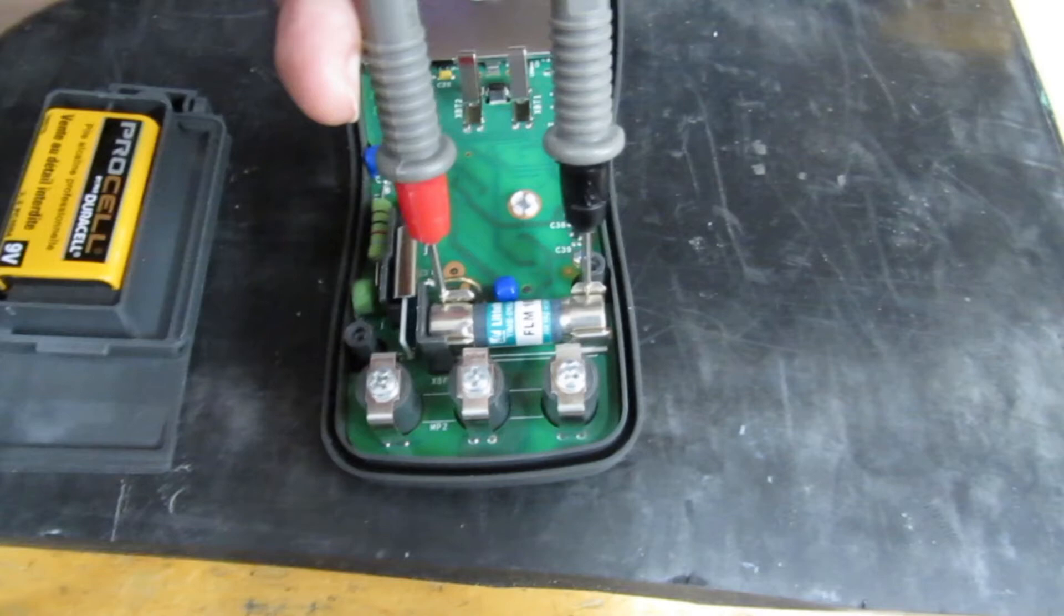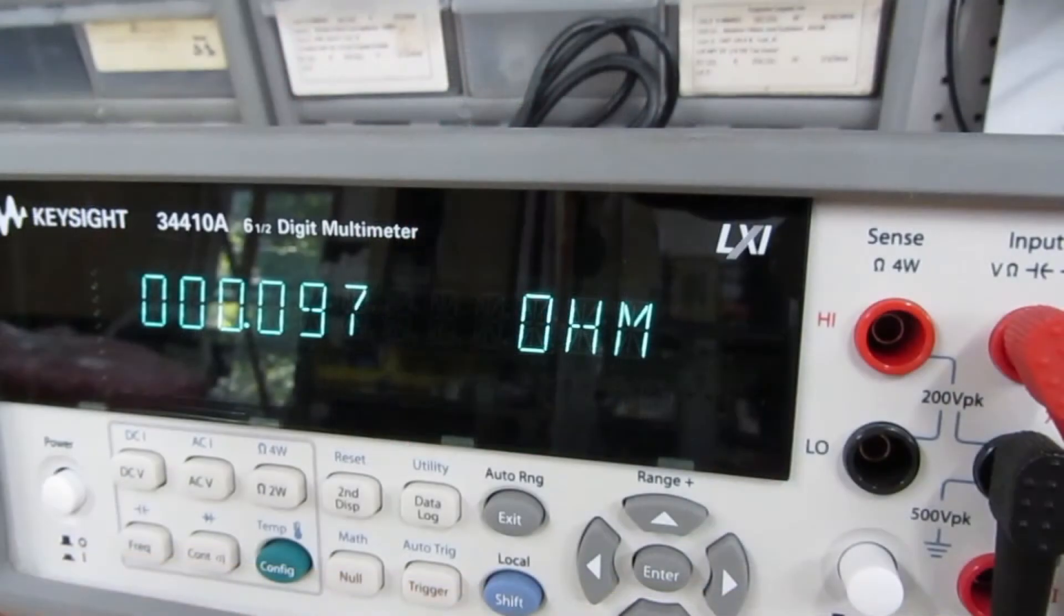Again, polarity doesn't matter. We will check the new fuse, and sure enough, it is good. It's 0.097 ohms, which is just the resistance of the fuse and the test lead. So that's great. Good continuity. We'll button her back up and test some more.